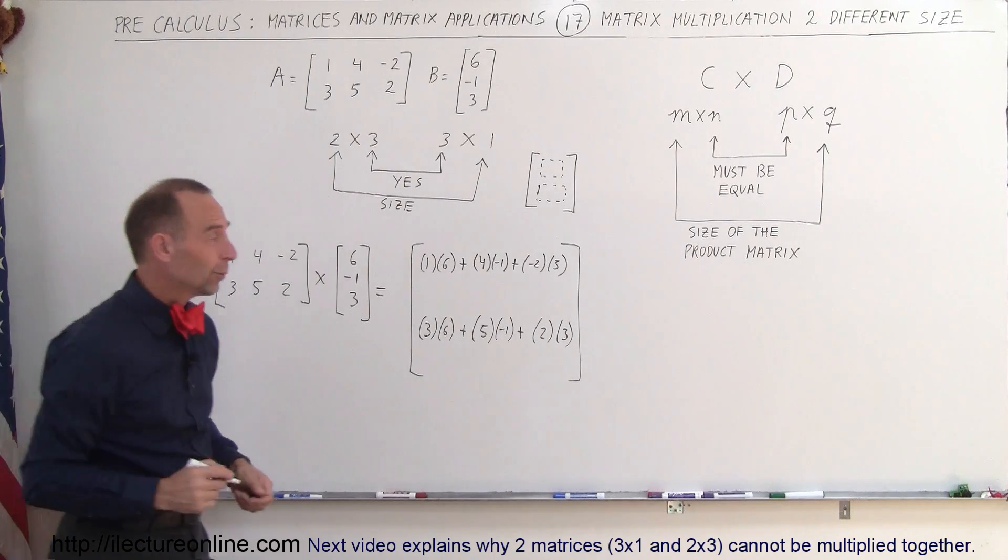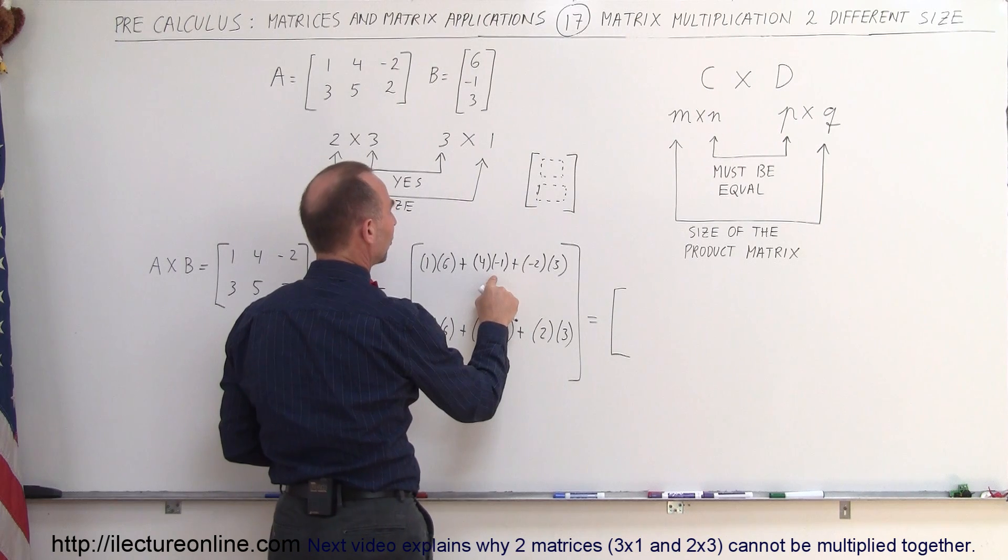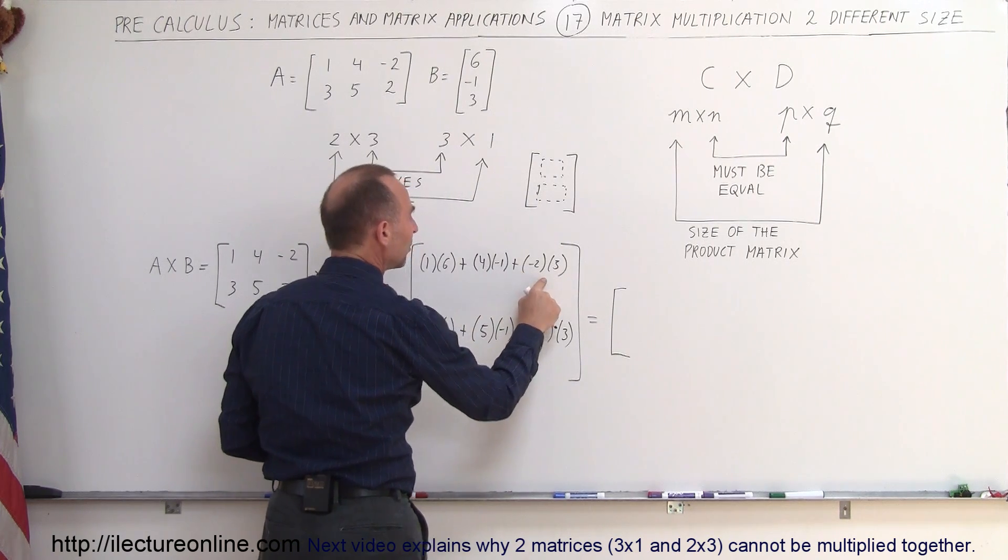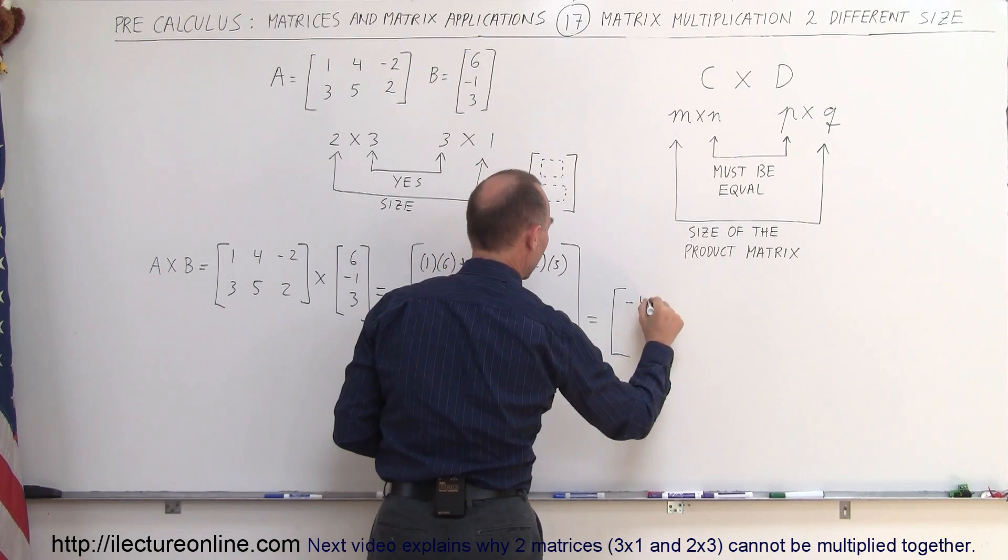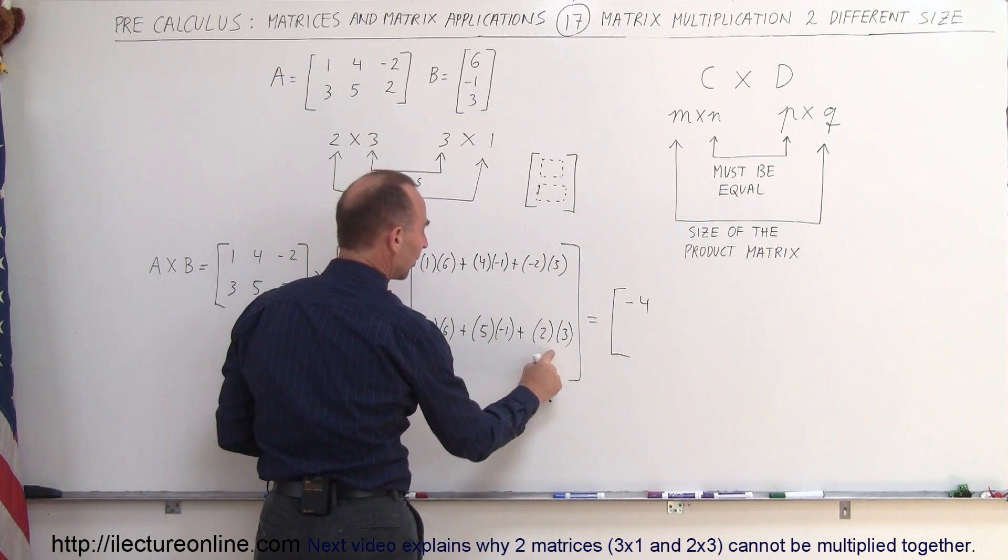And then if we simplify that, we get the following. That would be 6 minus 4, that's 2, minus 6, that would be a minus 4. And over here we get 18 minus 5 is 13 plus 6 is 19.